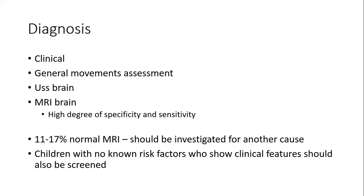At-risk children have to undergo these tests, and they have a high degree of specificity and sensitivity. A certain amount of children with cerebral palsy have even normal MRI — 11 to 17 percent — and should be investigated for another cause. Always exclude other causes, especially treatable metabolic causes, before diagnosing cerebral palsy. If the MRI is normal, you have to look for another cause. Children with no known risk factors who show clinical features should also be screened.